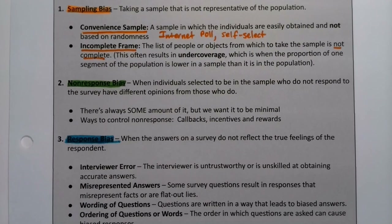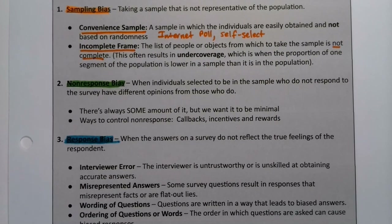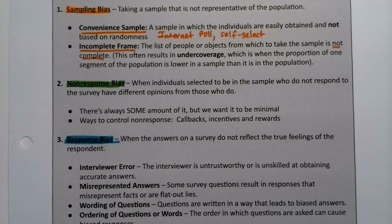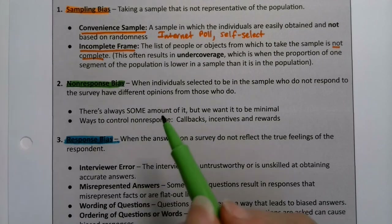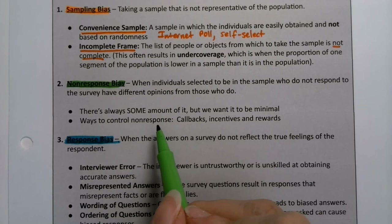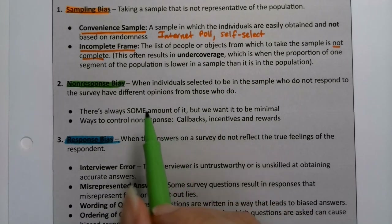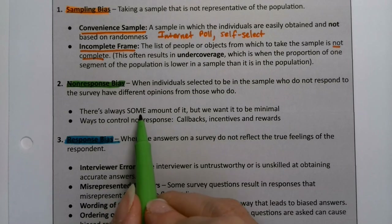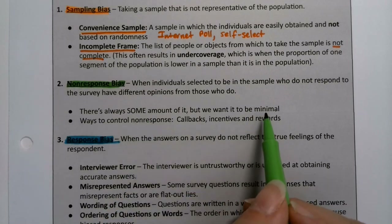Non-response bias is a different problem. Your frame was fine — you had the list of everybody. But people are not responding. People hang up on you when you call. This is actually becoming a bigger and bigger problem with the rise of cell phones, because people screen their calls. There's always some of this, but we want it to be minimal.